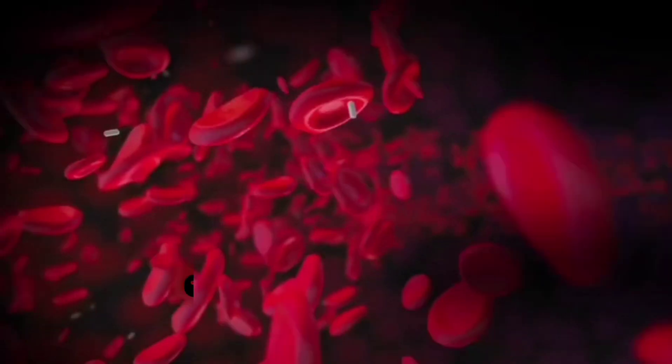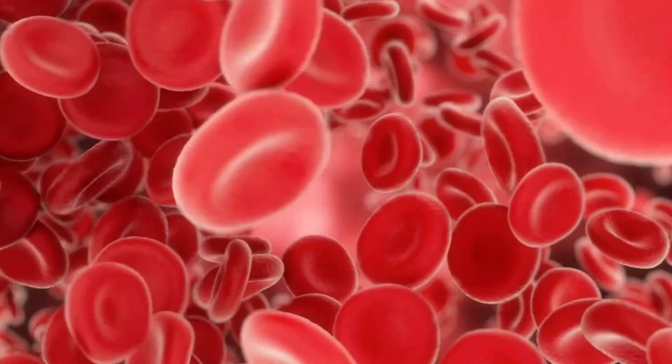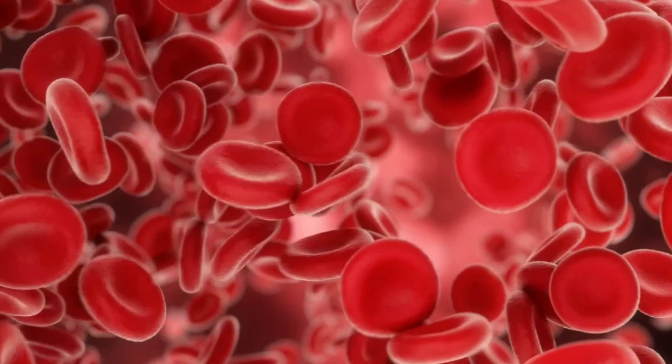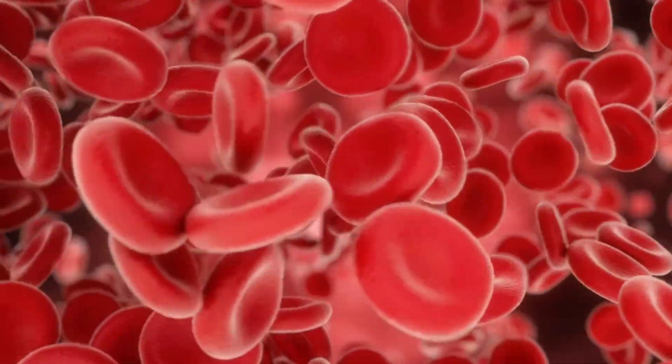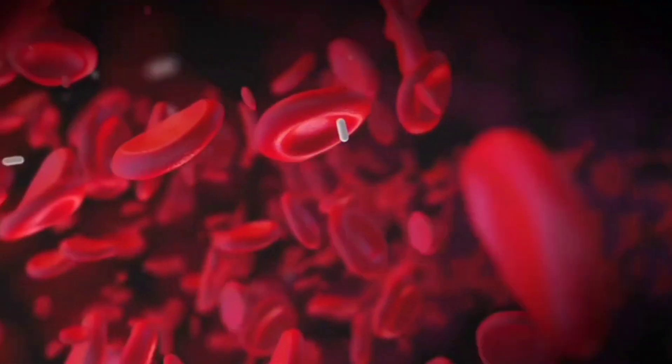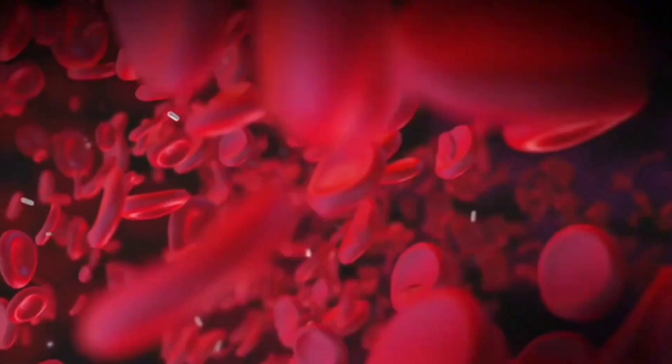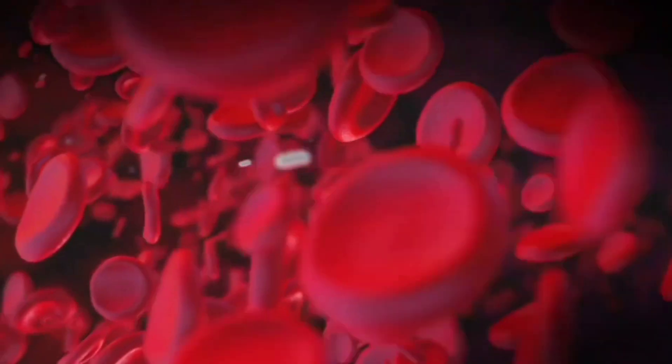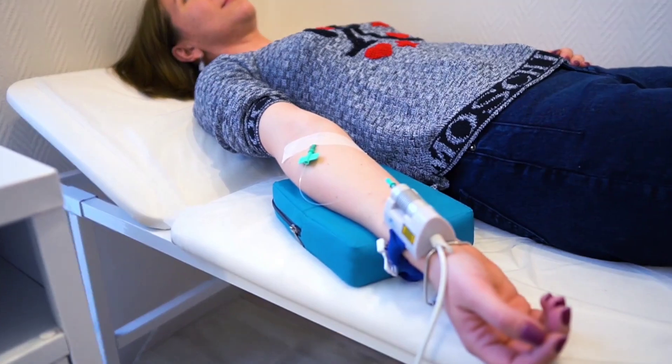Fact 13. AB plasma is universal. While their red cells aren't universal, their plasma is. Plasma from AB donors can be given to anyone. That's because AB plasma doesn't contain anti-A or anti-B antibodies. Hospitals love AB plasma for emergencies, trauma care, and burn victims. So if you're AB, donating plasma can help more people than you might think.